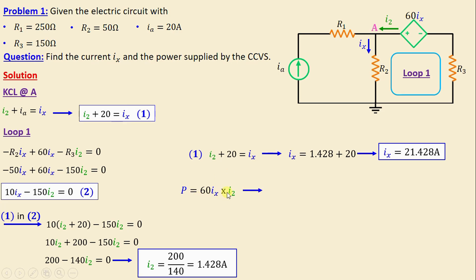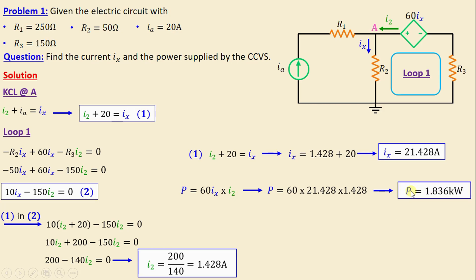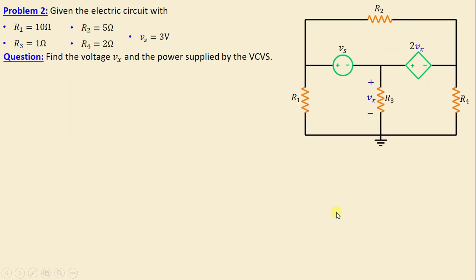The power supplied by the dependent source is equal to 60 ix multiplied by i2. Replacing ix and i2 with their numerical values, the power supplied by the dependent source is equal to 1.836 kilowatts.